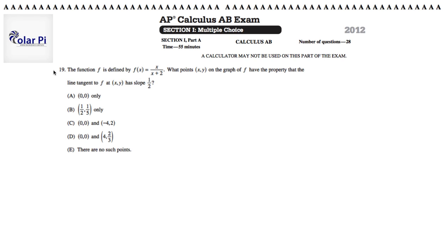Hi, welcome. In this video, we'll do problem 19. Problem 19 says the function f is defined by this. What points x, y on the graph of f have the property that the line tangent to f at x, y has slope 1 half? Wow, what a fancy and convoluted way to say, where is the derivative equal to 1 half?